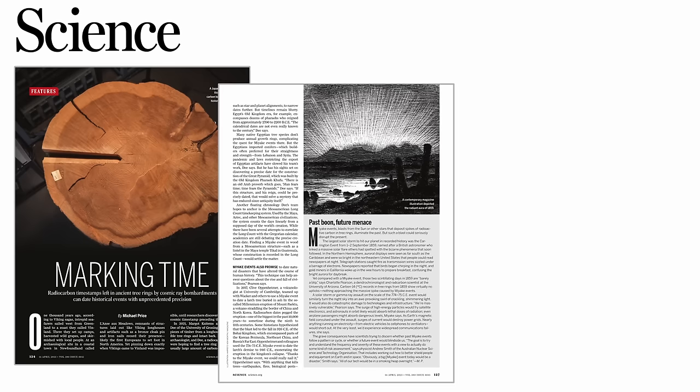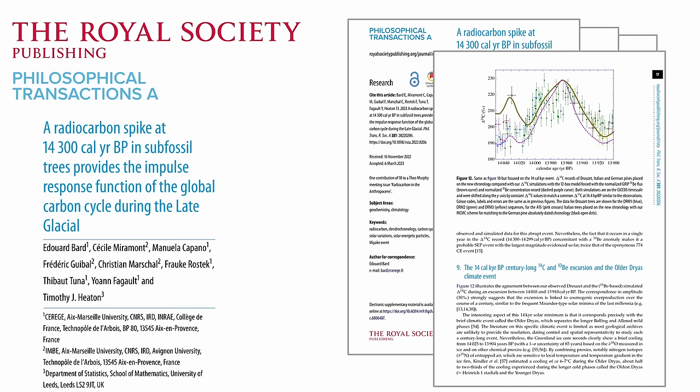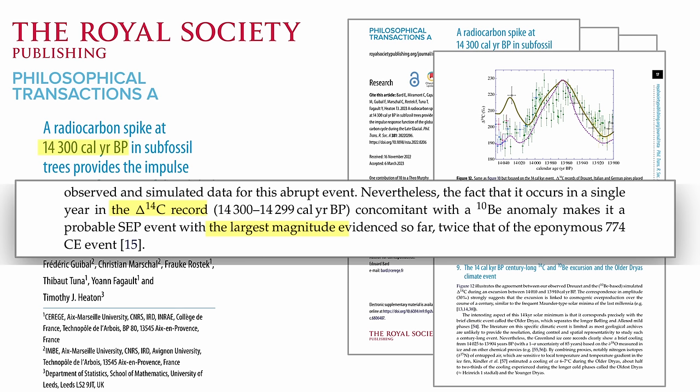Scientists believe this so-termed Miyake event was around 80 times more powerful than the Carrington event. Since 2012, scientists have independently confirmed at least five such events throughout Earth's ancient history. And a recent finding in 2023 suggests an event in the year 14,300 BC was twice as strong as the original Miyake event.